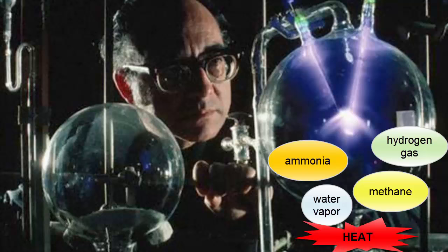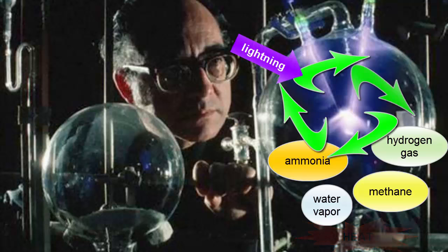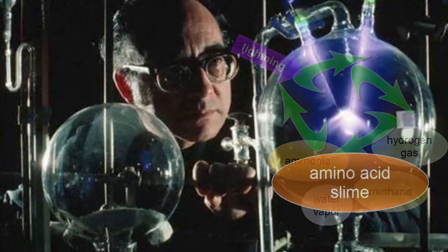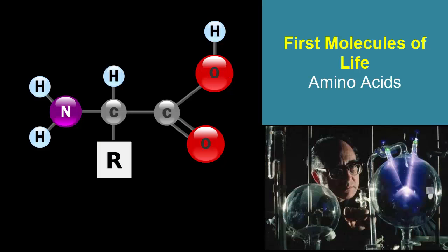He warmed a soup of these chemicals, circulated them through a region where they were subjected to electric sparks simulating lightning, and cooled them and returned the products to the soup. Within a few days, the soup was a brown slime that contained amino acids, the building blocks of proteins. Although scientists no longer think the components of his experiment were an exact match to early Earth's environment, Miller's experiment showed scientists that it was possible to create, through natural processes, the building blocks needed for life.